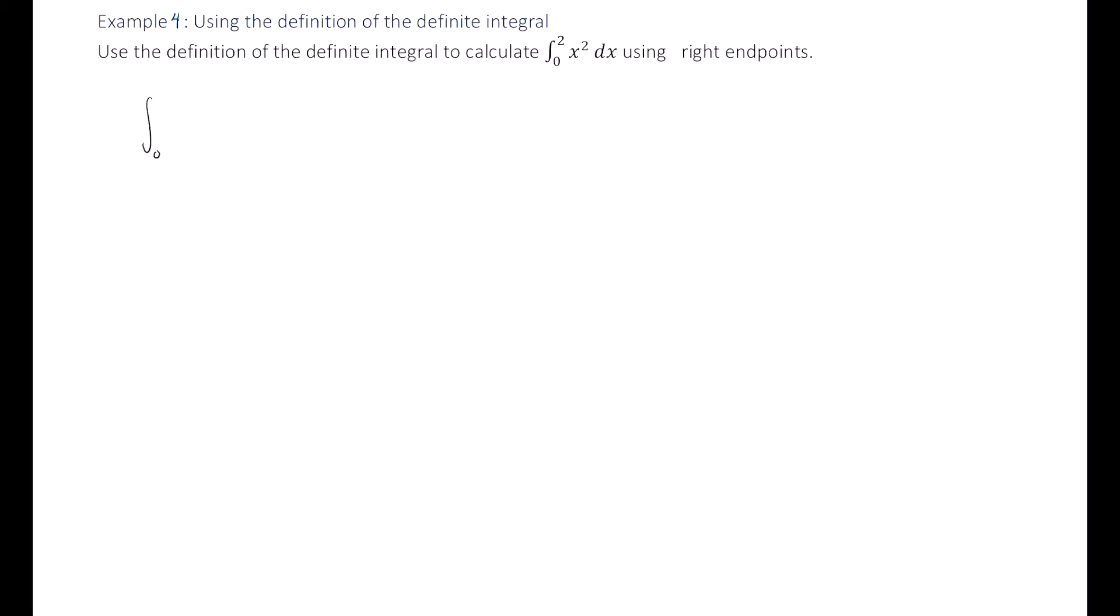So let's start by writing this out using the limit definition. So we have the integral from 0 to 2 of x squared dx is equal to the limit as n approaches infinity of the sum from i equals 1 to n of f of xi delta x where xi is the right endpoint of each interval.